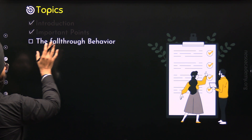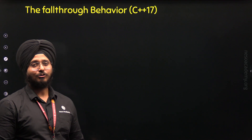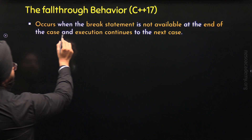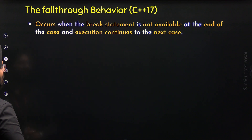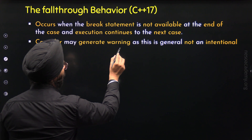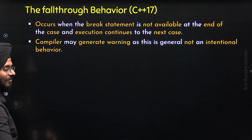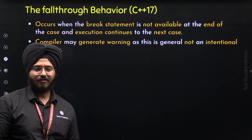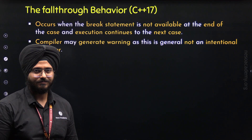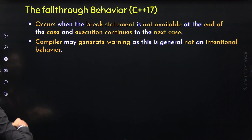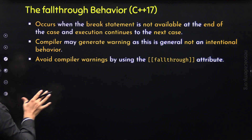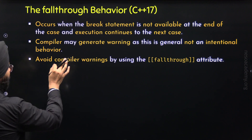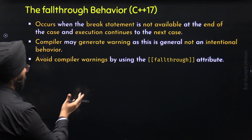Now let's move to the third topic to understand the fall-through behavior. Fall-through behavior occurs when the break statement is not available at the end of a case and execution continues to the next case. One thing to note is that the compiler may generate a warning, as this is generally not an intentional behavior. If we want the fall-through behavior to be intentional, we need to provide the [[fallthrough]] attribute. This attribute allows us to implement fall-through behavior without any compiler warnings.